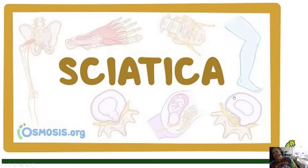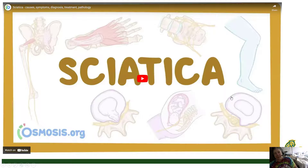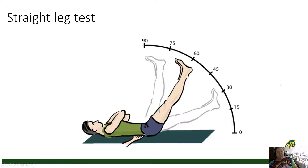Sciatica is a sub-category of lower back pain that may often result from disc injuries. When we suspect sciatica, we do the straight leg raise — the patient is supine and we raise one leg to see if it reproduces their symptoms, paying attention to what degree of hip flexion results in reproduction of that radiating pain.